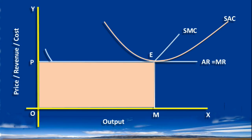Average cost times quantity, i.e. OP multiplied by OM, is the total cost. In the diagram, OPEM is the total cost. Total revenue is equal to total cost. The firm is earning normal profit. Thus, a competitive firm in short run equilibrium may earn normal profit.